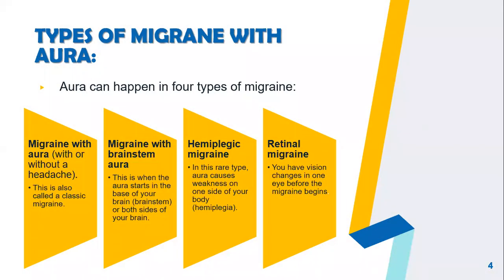Aura can happen in four types of migraine. Number one, migraine with aura, with or without a headache, also called classic migraine. Number two, migraine with brainstem aura, when the aura starts in the base of your brain or both sides of your brain. Third is hemiplegic migraine, a rare type where aura causes weakness on one side of your body. Fourth is retinal migraine, where you have vision changes in one eye before the migraine begins.